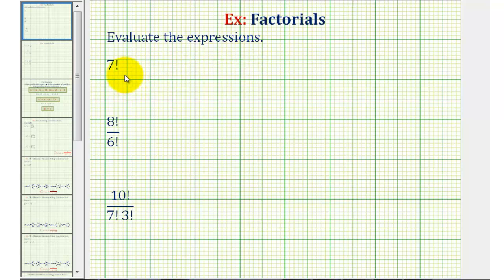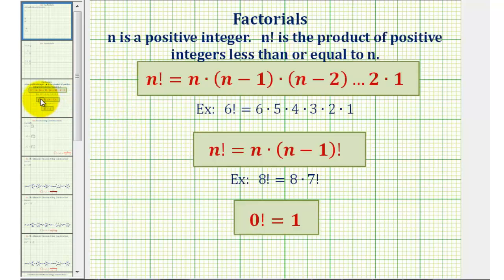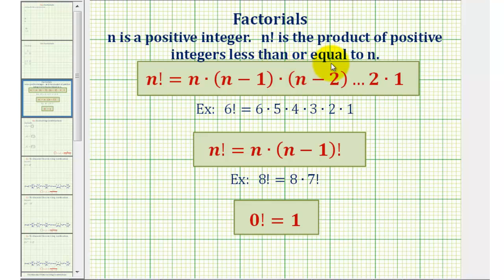We want to evaluate the given expressions involving factorials. So let's start with a review of factorials. For n factorial, n must be a positive integer, where n factorial is the product of positive integers less than or equal to n.